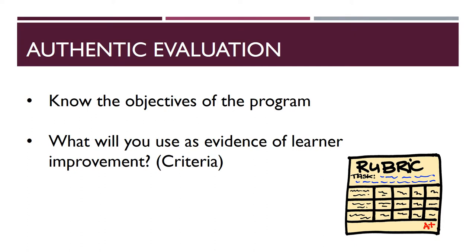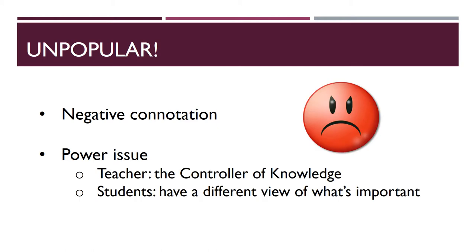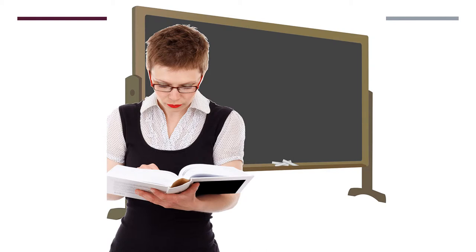When evaluating, it is important that it is done in an authentic way. You need to know what the objectives are for the program and what you will be using as evidence for the learning's improvement — that is, the criteria you will be using. When you hear someone talking about evaluation or tests, most have negative connotations, especially around the issue of power: teachers know what's going to be on the test, while students have to guess how to shape what they know to fit the teacher's frameworks. If our students know exactly why we are evaluating them, it will dissipate those negative connotations.